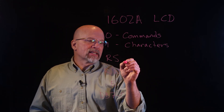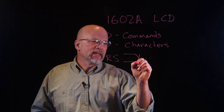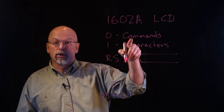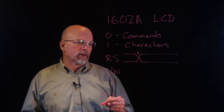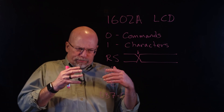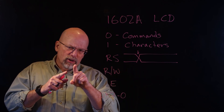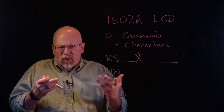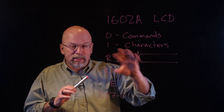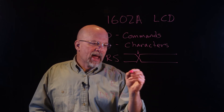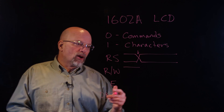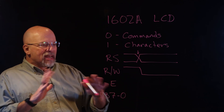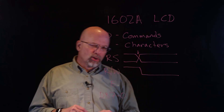At some point we decide which register we're going to select — whether we're communicating a command or a character. When you write a character, it writes at the current cursor position, and depending on the display configuration, the cursor either increments to the right or to the left. If we select a character, we write to the character register; if we set a 0, we write to the command register. The read-write signal will always be 0, since we are writing all the time.